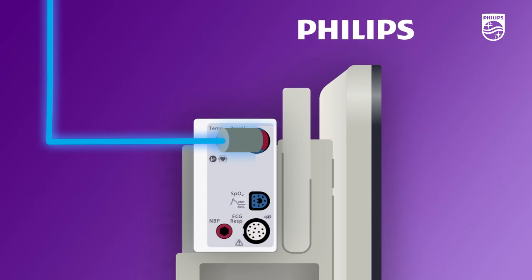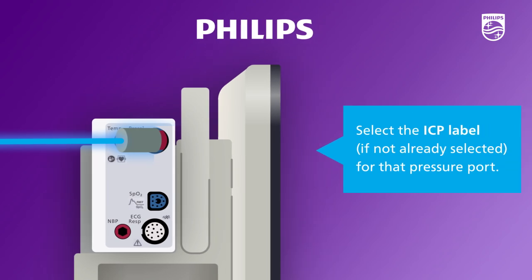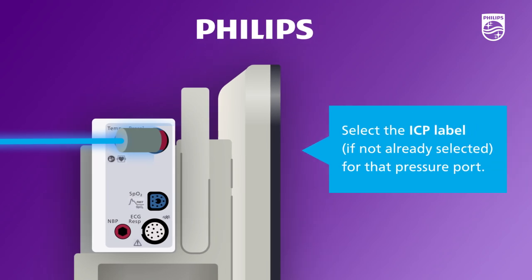Connect the ICP transducer to the Philips monitor pressure port and select the ICP label, if not already selected, for that pressure port.